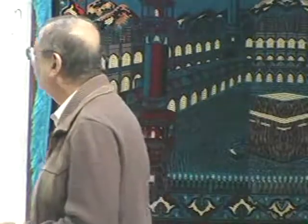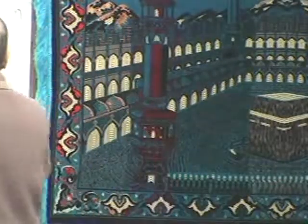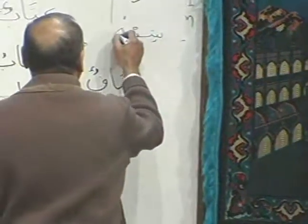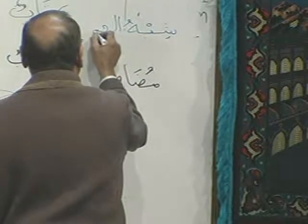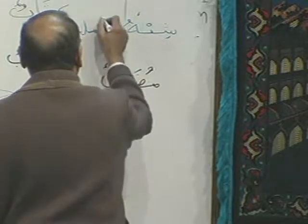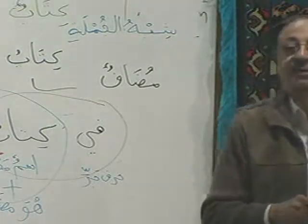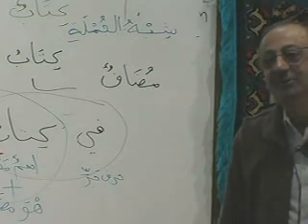So if I say jar majroor khabar, then I have to say jar majroor shibhu jumla khabar. What is shibhu jumla? Remember I wrote it down last time? Shibhu jumla ti. And if it is a zarf coming in place of a khabar, then we say zarf shibhu jumla khabar and then mudafilehi.